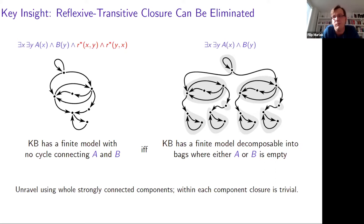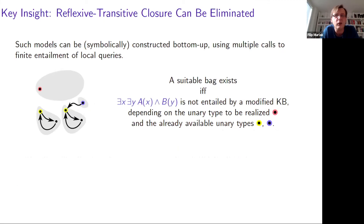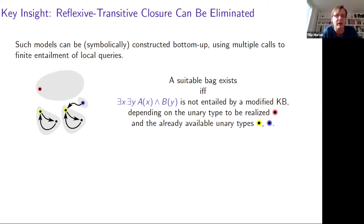The only thing you need to check is if there exists such a tree-like model. This is not totally trivial because the bags are unbounded, unlike typical bounded tree-width scenarios. But we can still symbolically construct this tree-like model by reducing the existence of every single bag to query answering for those local queries, where entailment is by a slightly modified knowledge base depending on the unary type we want to satisfy and types for which we already created witnesses. This solves the problem in this easy case.